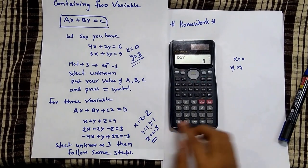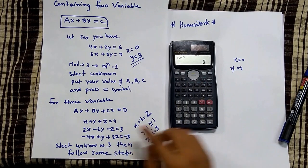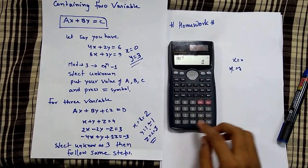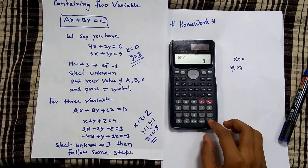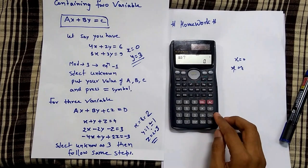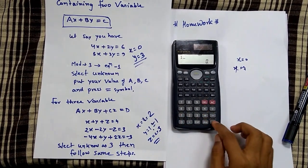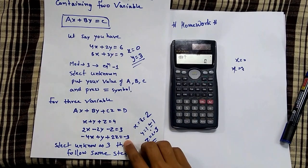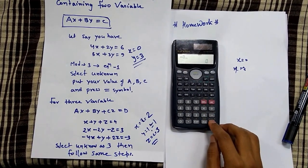Then for the second equation: a2 is 2, b2 is minus 2, c2 is minus 1, and d2 is 3. For the third equation: a3 is minus 4, b3 is 1, c3 is 2, and d3 is minus 3. So x equals 2.